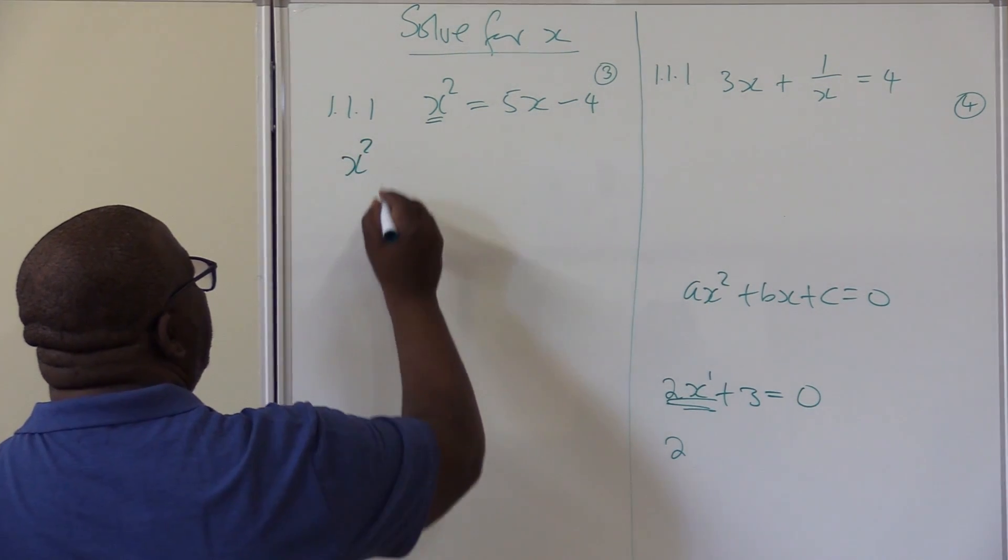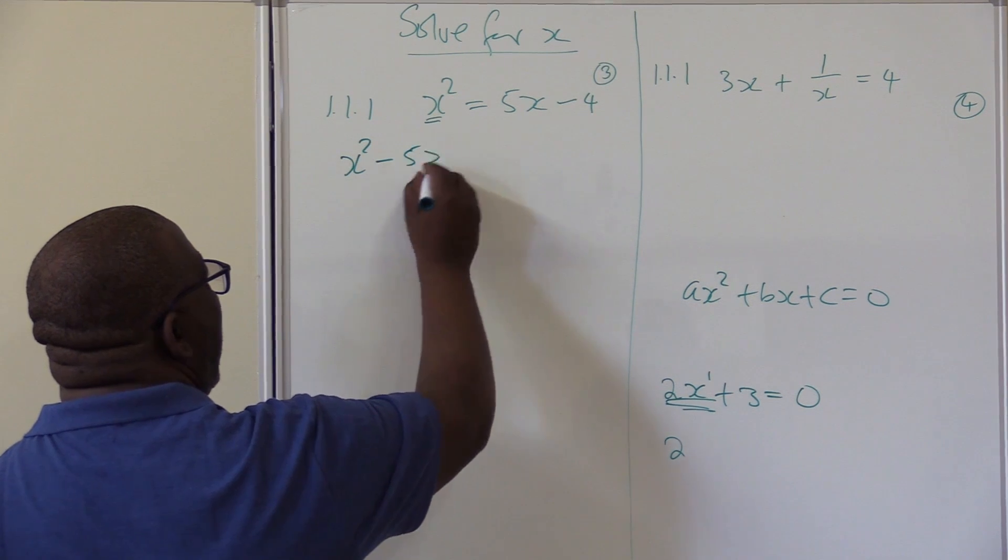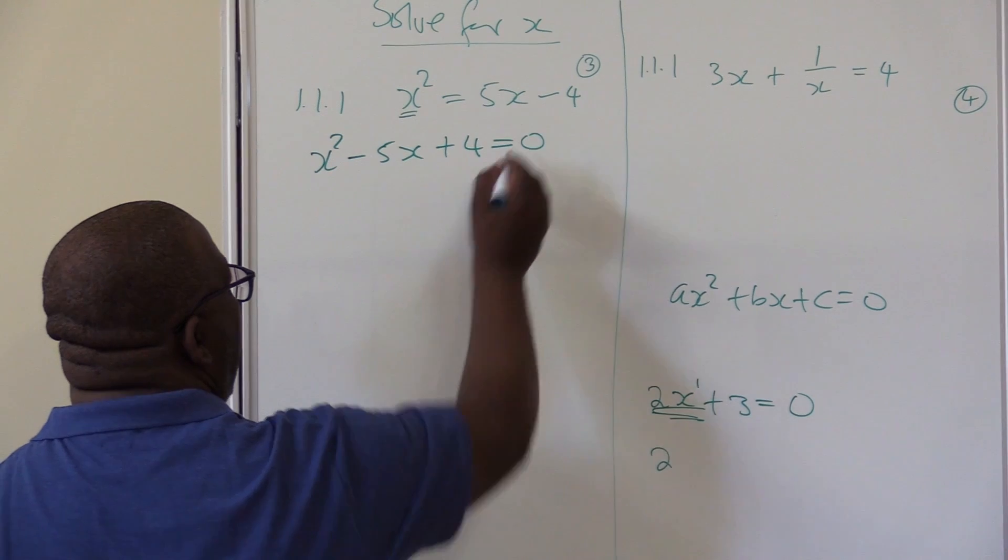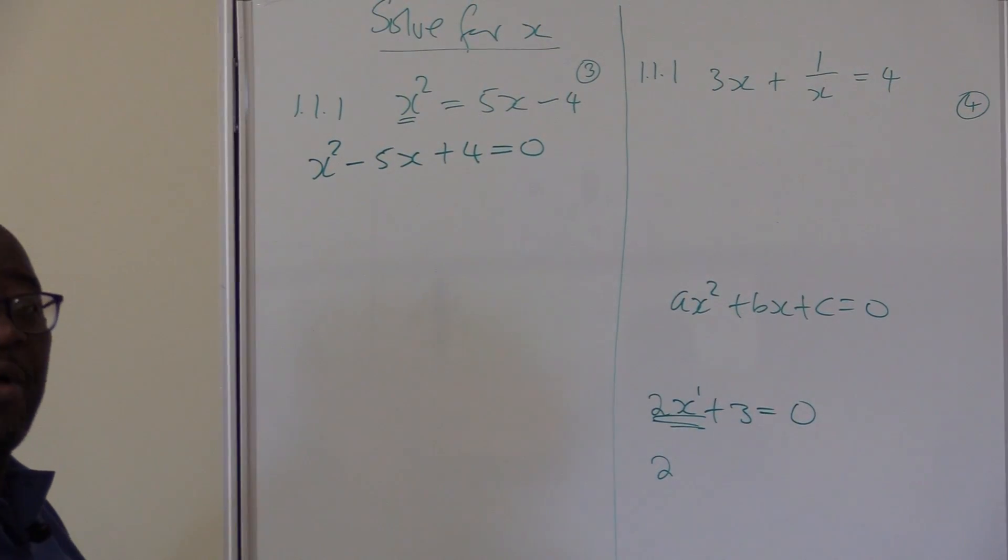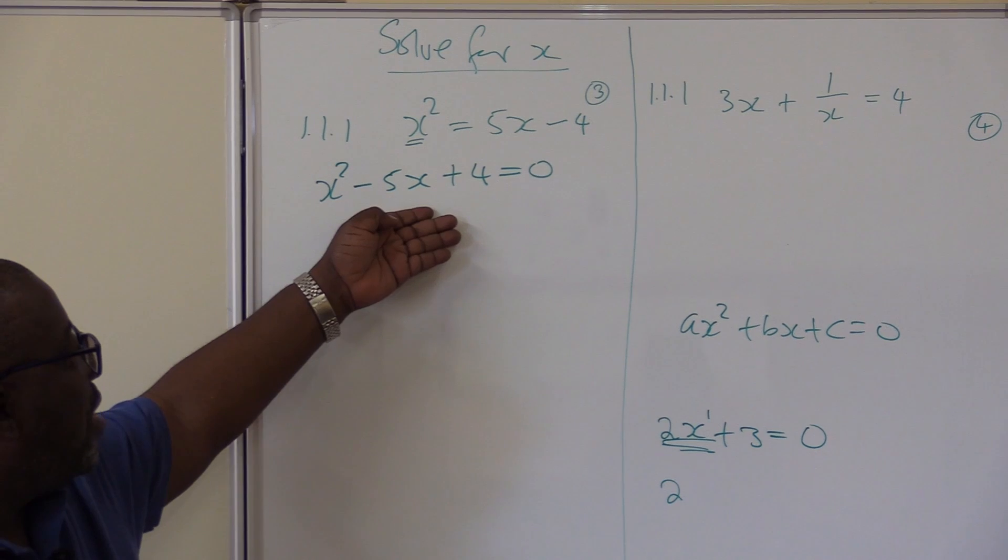We have x squared. Take this 5 this side, it will be minus 5x. And for this side it will be plus 4. This is equal to 0. It is now in the form that you wanted, in the form of ax squared plus bx plus c.